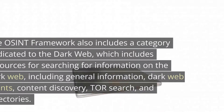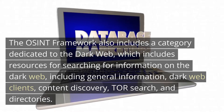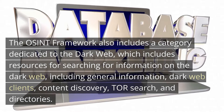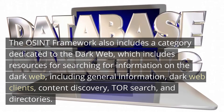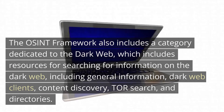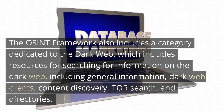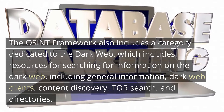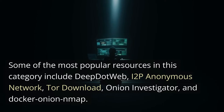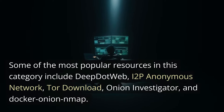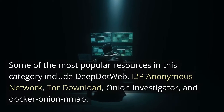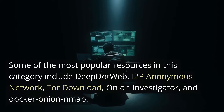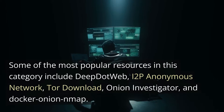The OSINT framework also includes a category dedicated to the dark web, which includes resources for searching for information on the dark web, including general information, dark web clients, content discovery, Tor search, and directories. Some of the most popular resources in this category include Deep.web, I2P Anonymous Network, Tor Download, Onion Investigator, and Docker Onion Nmap.